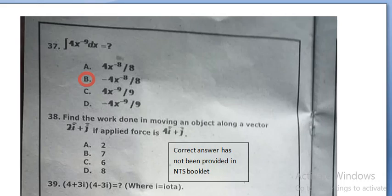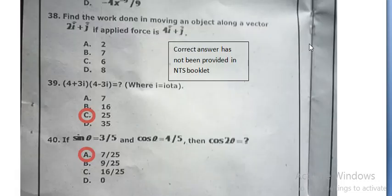Find the work done in moving an object along a vector 2i plus j if applied force is 4i plus j. Correct answer has not been provided in NTS booklet.